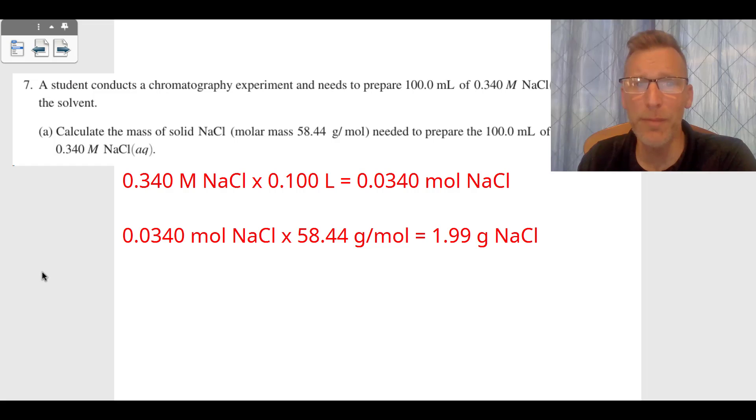Then we take those moles, multiply by the molar mass that they gave of 58.44 grams per mole, and that means we need 1.99 grams of NaCl to make this solution. And so that's going to be a point for A.